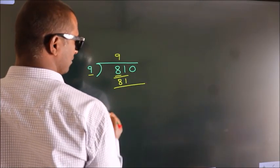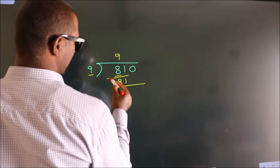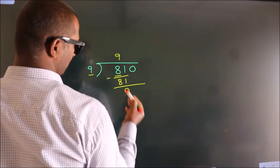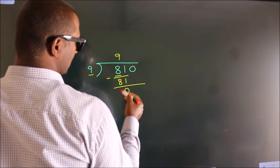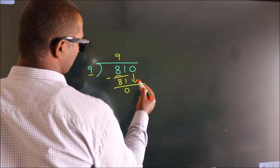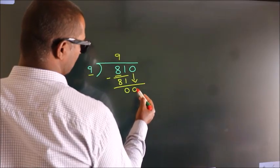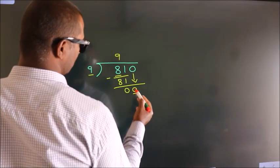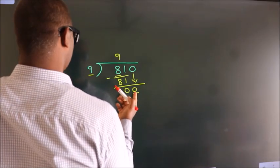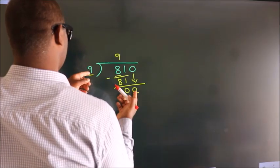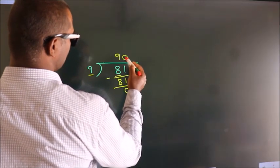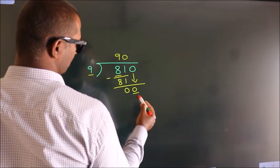Now we should subtract, we get 0. After this, bring down the beside number — so 0. When do we get 0? In the 9 table, 9 times 0 is 0.